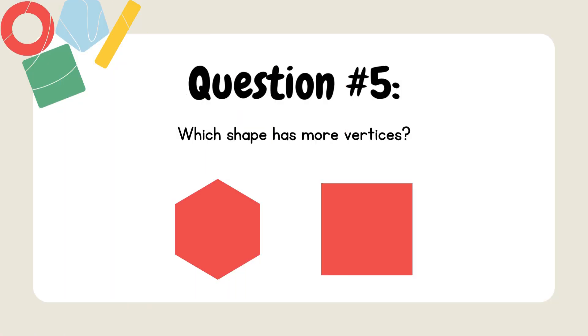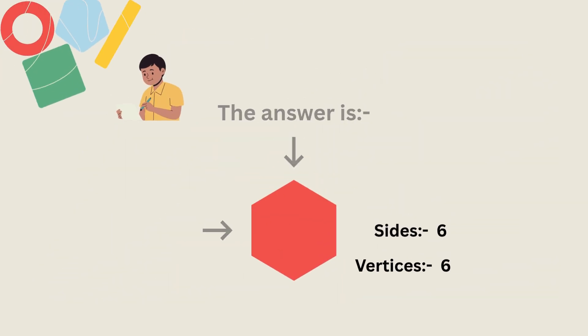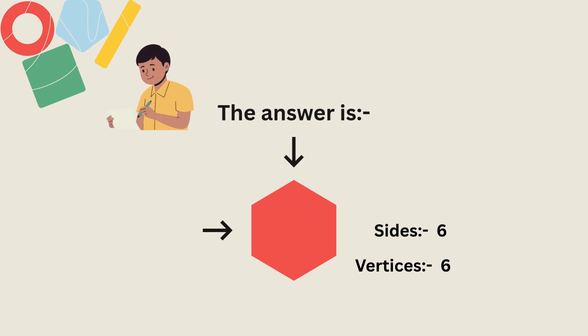Question 5. Which shape has more vertices? The answer is sides equal to 6 and vertices equal to 6.